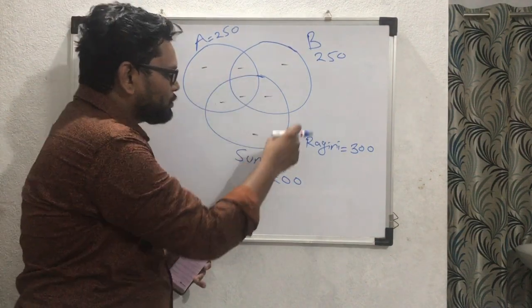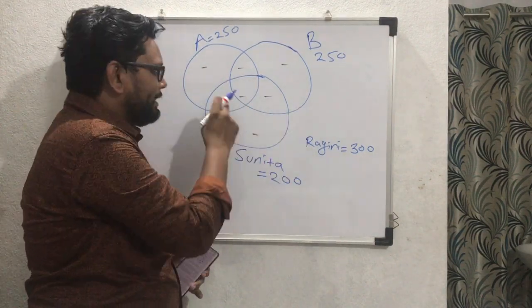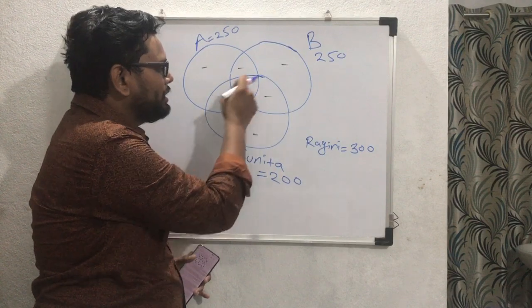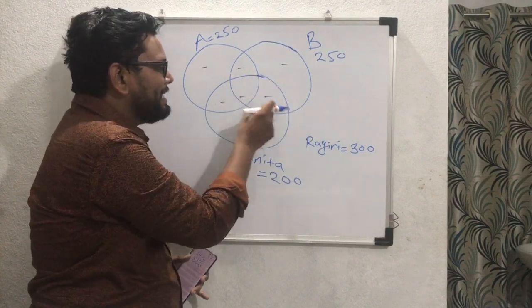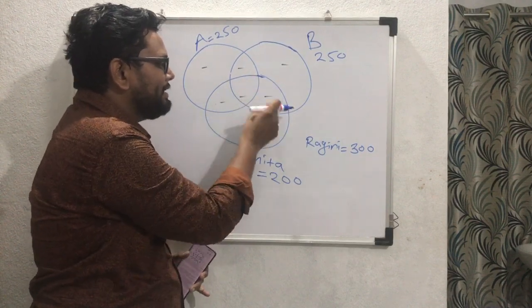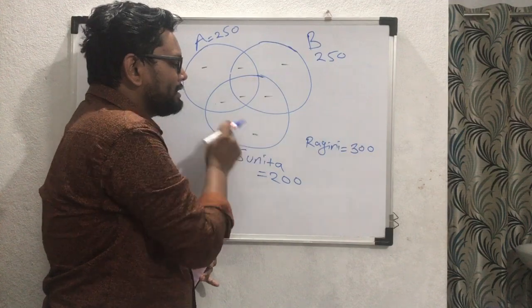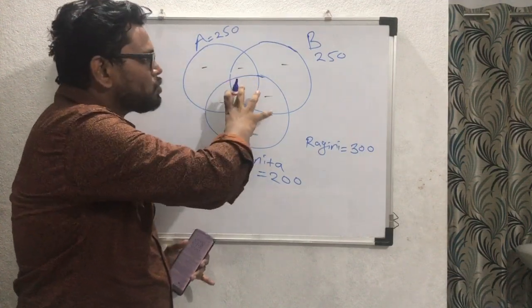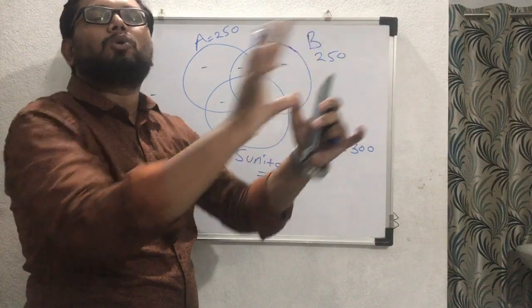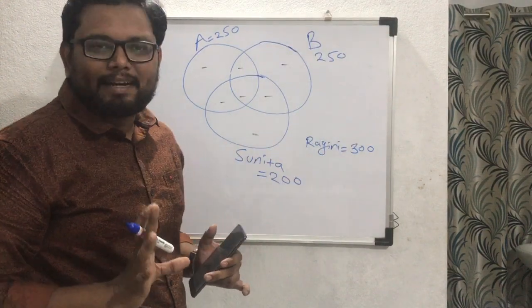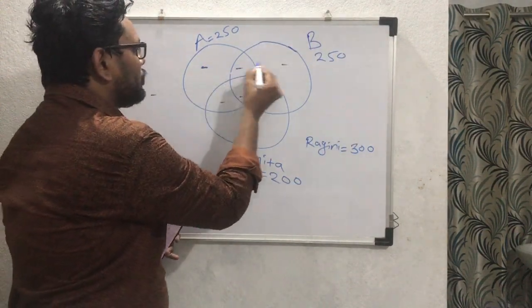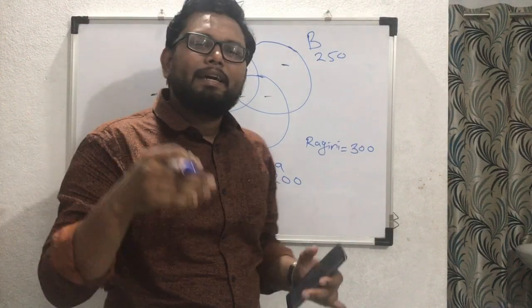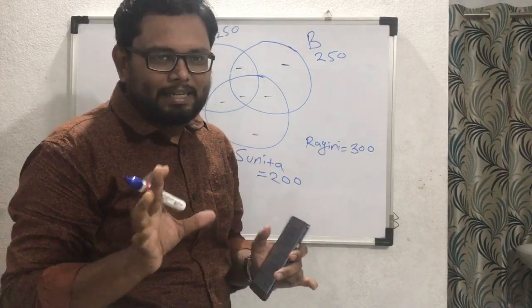I have just the Sunita circle. Regions 1, 2, 3, 4 — these four regions are inside Sunita's circle. That means these four regions represent students who are supporting Sunita. And for students supporting Ragini, regions 1, 2, 3, 4 — these four regions represent students who are supporting Ragini.